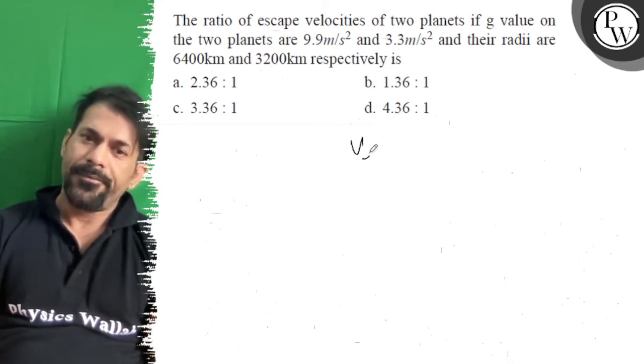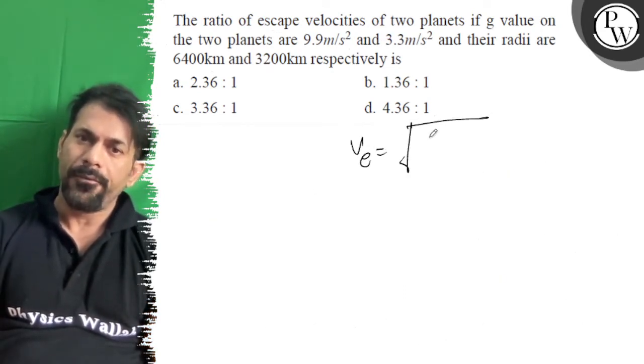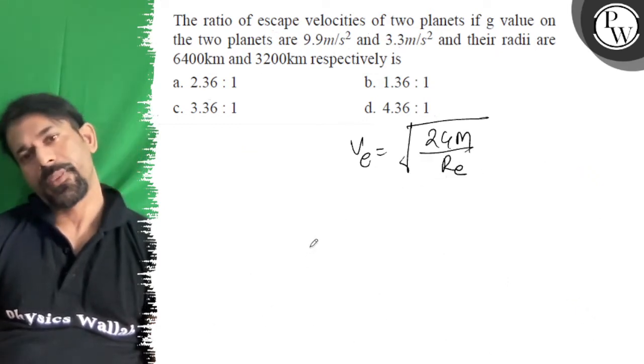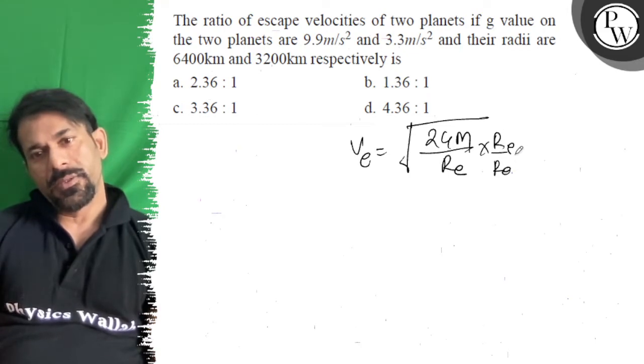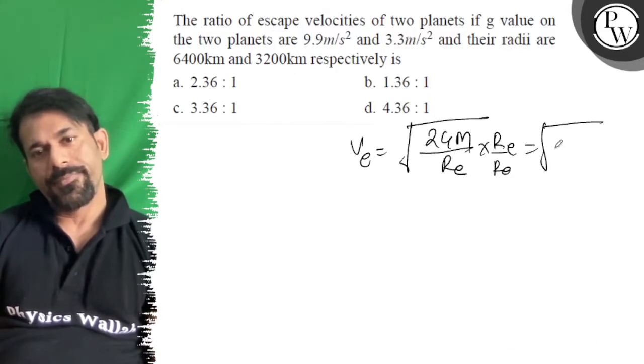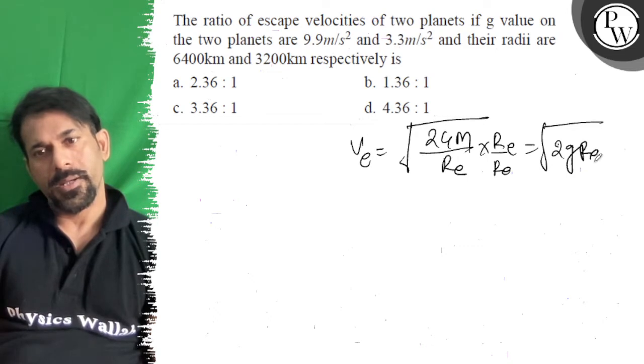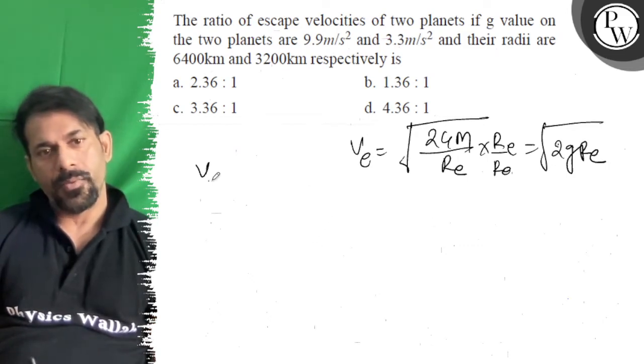So if I write the escape velocity, then it will be root of 2GM by Re. If we multiply Re by Re, then it will be root of 2g*Re. So v_escape1 upon v_escape2 is equal to root of g1*Re1 upon g2*Re2.